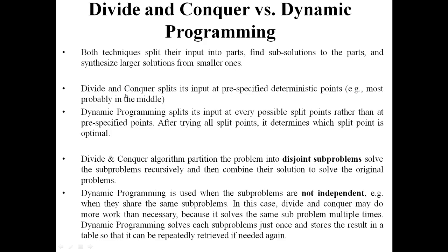Divide and conquer splits its input at pre-specified deterministic points. Dynamic programming, on the other hand, splits its input at every possible split point rather than at pre-specified points, and identifies the correct point from each split.